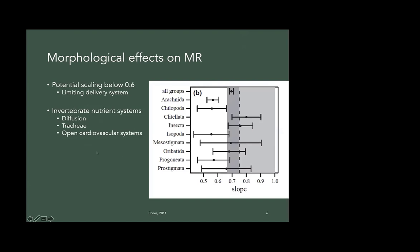So these are a bunch of different taxa of invertebrates. And invertebrate nutrient systems are very varied, right? You have diffusion in some, trachea in a lot of insects and things like that, and also spiders. And they mostly have open cardiovascular systems. So they're very different from vertebrate systems.